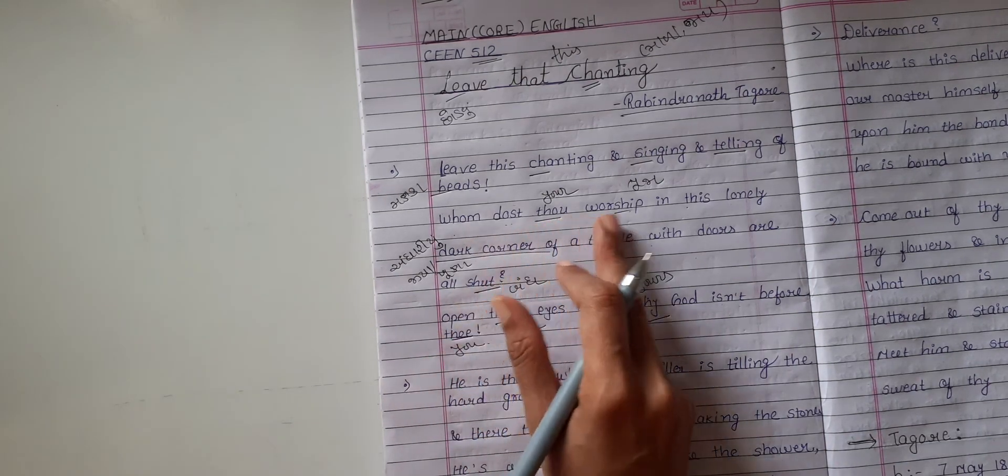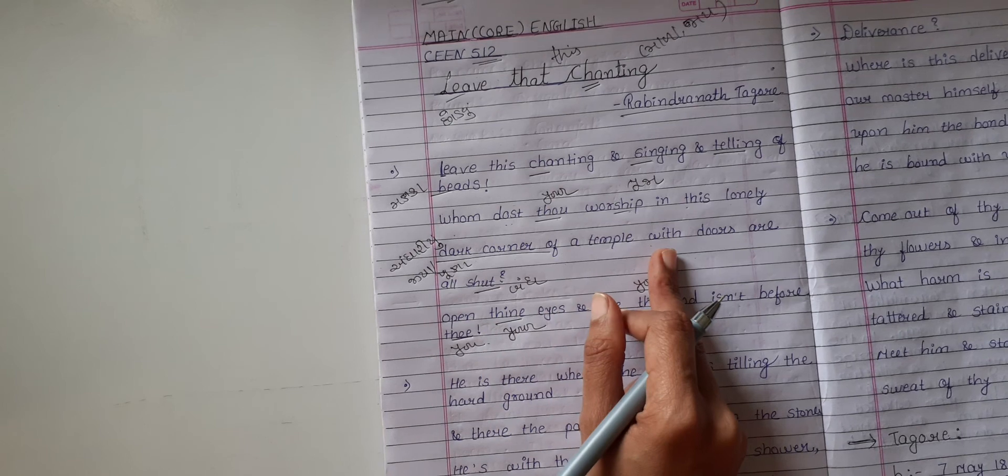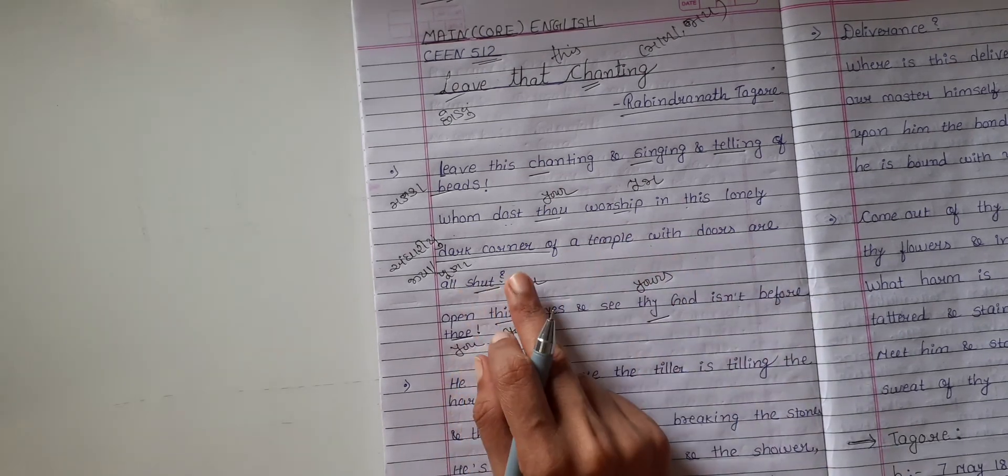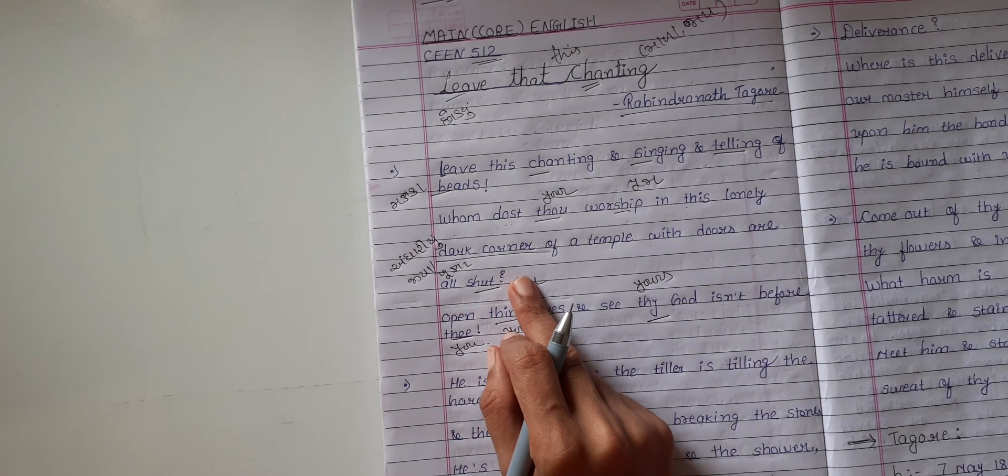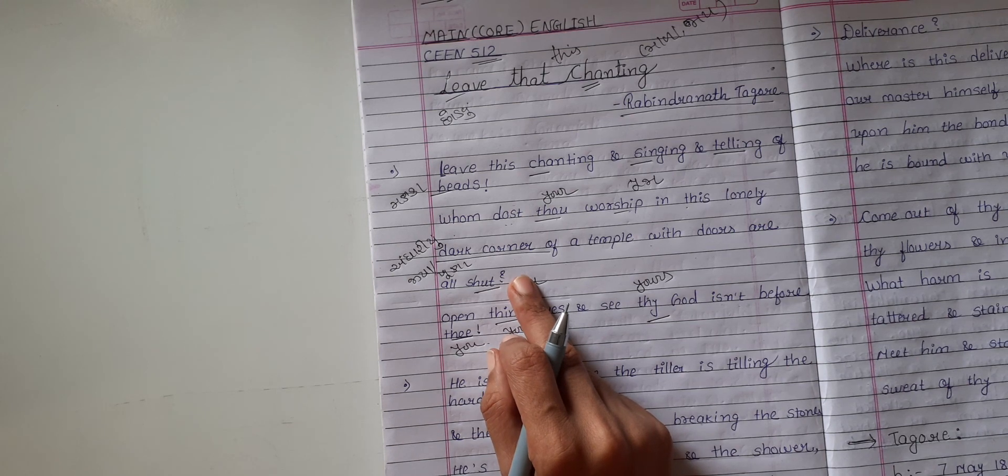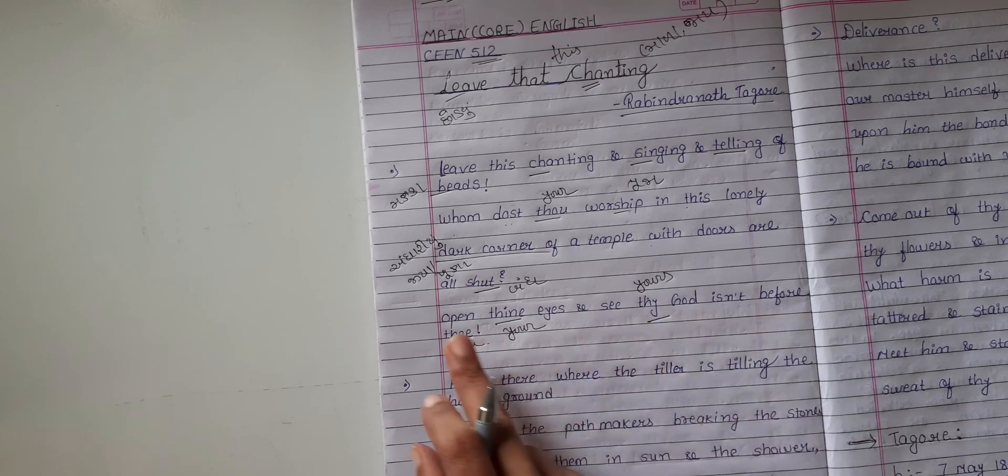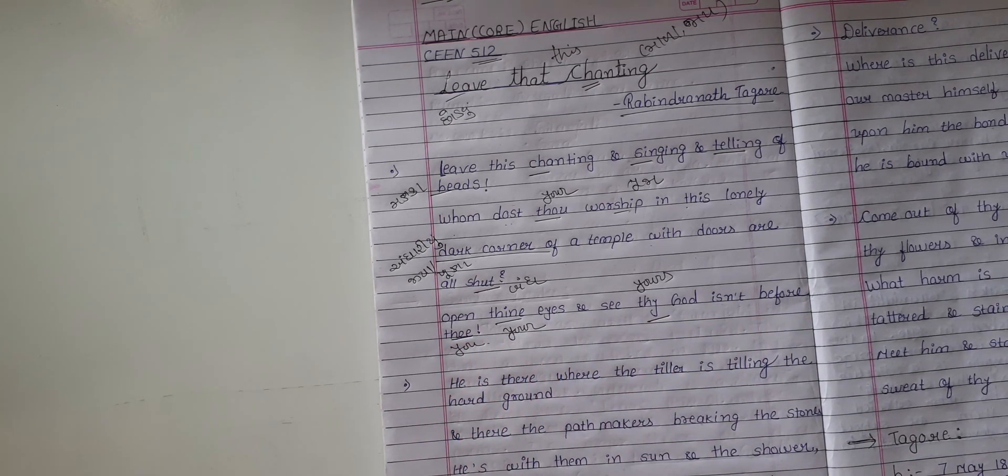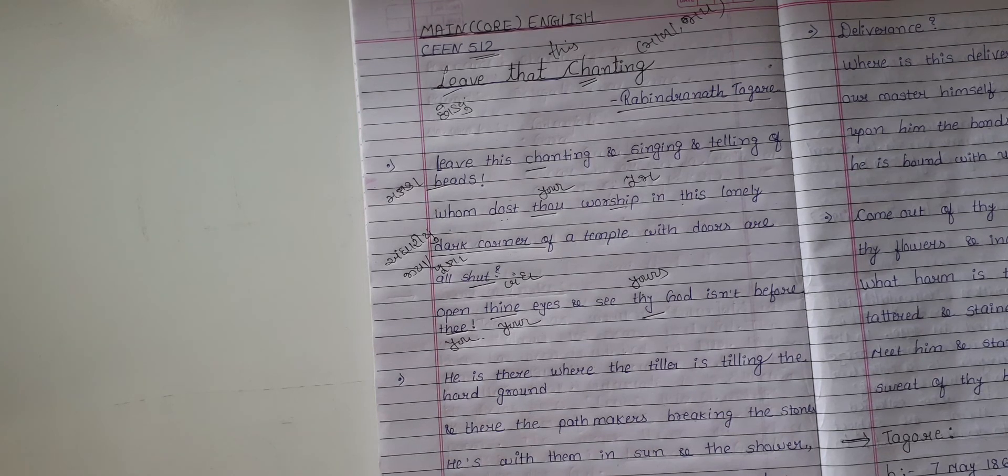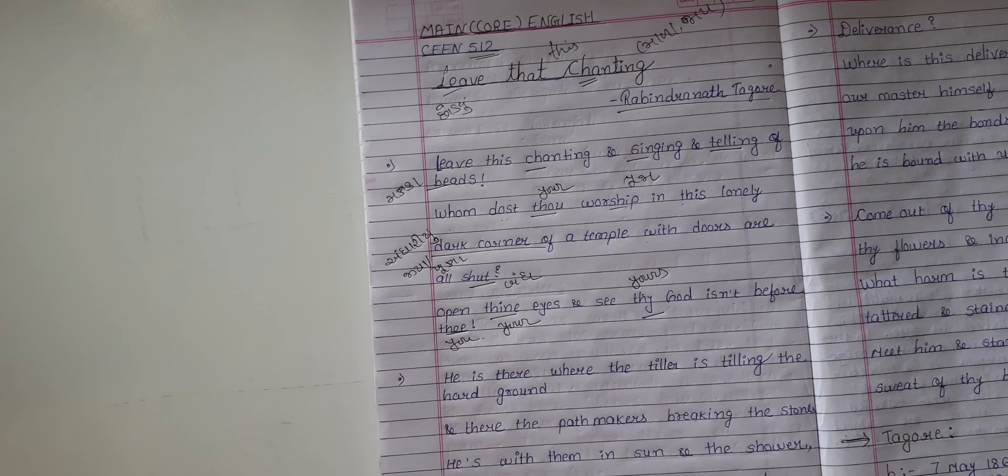The poet is saying, the japa and worship that you are doing in the dark corner of the temple, give it up. Open your eyes - meaning open your internal eyes, the eyes of your mind. The God you are worshipping, for whom you are chanting mantras, is not there before you.